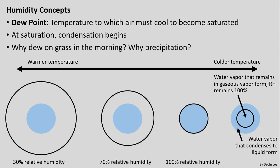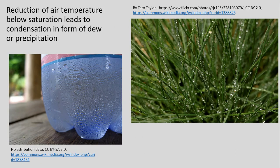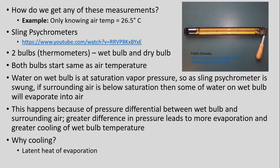The excess water vapor that can no longer be held as vapor condenses to liquid water form, ending up either as dew on the Earth's surface or as precipitation falling from the sky. We see this visually: a simple reduction of temperature below saturation leads to condensation as dew or precipitation. Another example: take a cold water bottle outside on a hot summer day — the very cold surface chills the air immediately around it, causing water vapor in the atmosphere to cool and condense along the outside of the bottle.